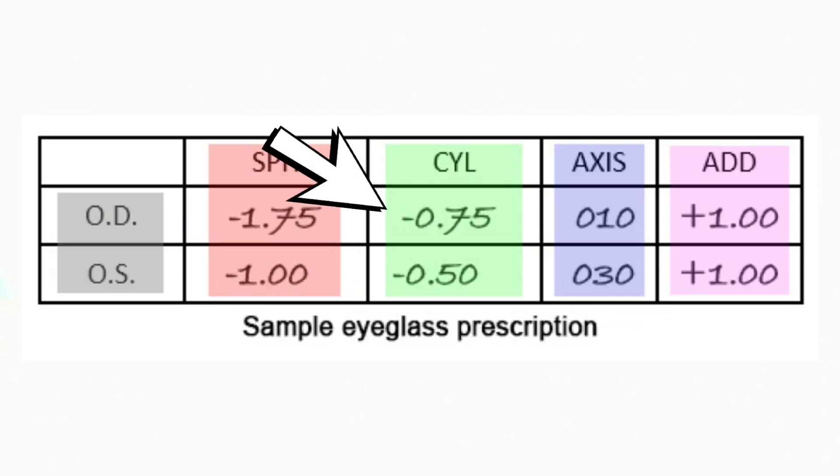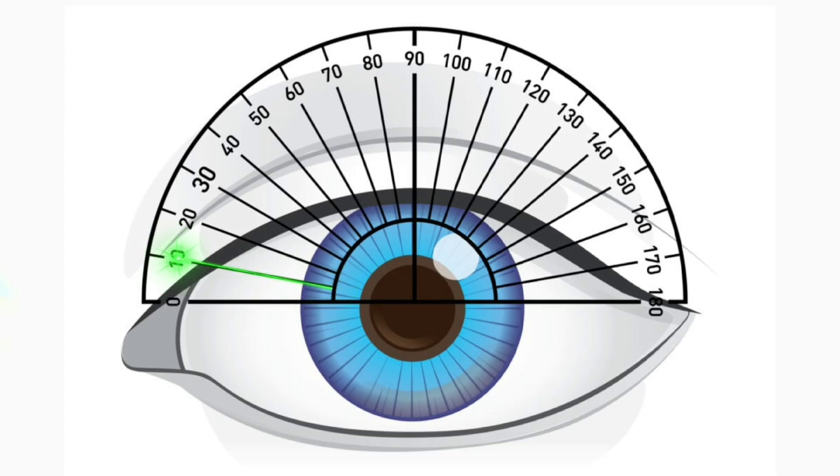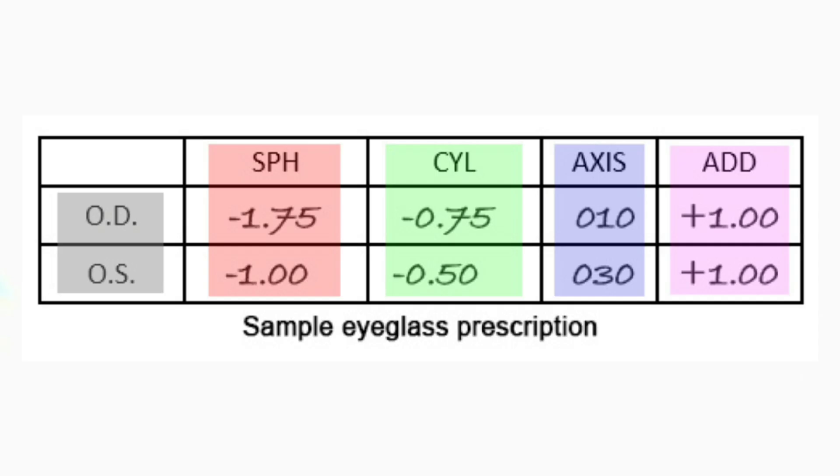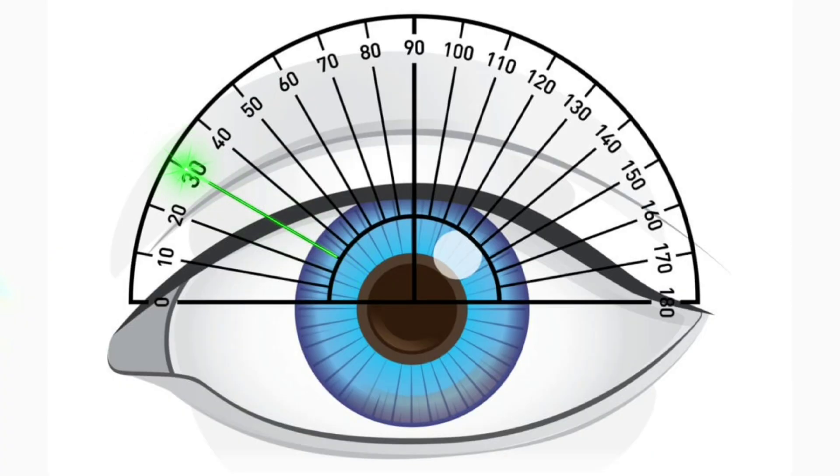If you have a negative 0.75 CYL number with a 10 axis value in the top row, that means that the 10 degree line of your right eye has 0.75 diopters less of optical power than its perpendicular direction. While negative 0.5 CYL with a 30 axis in the bottom row means that the 30 degree line of your left eye has 0.5 diopters less of optical power than its perpendicular direction.